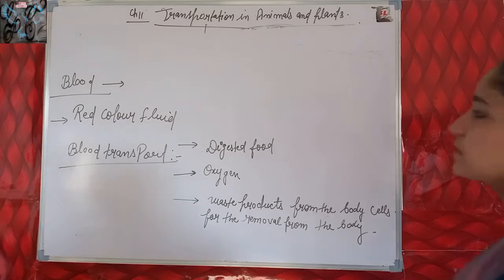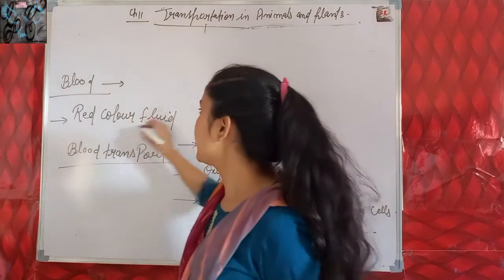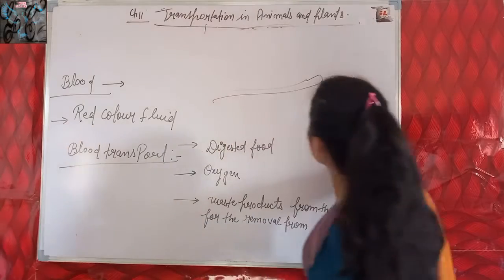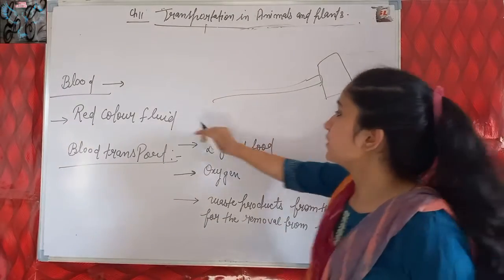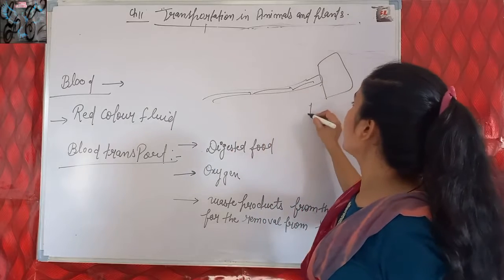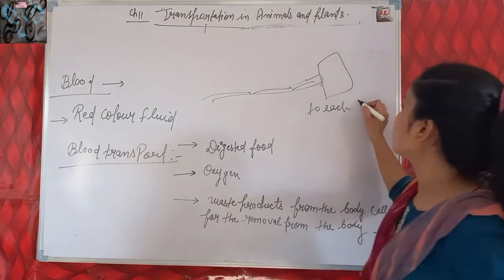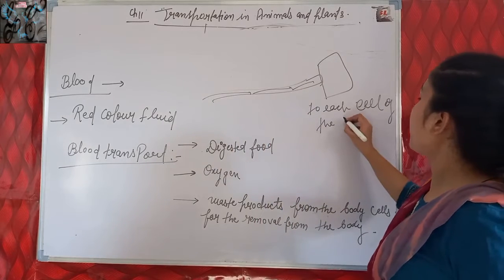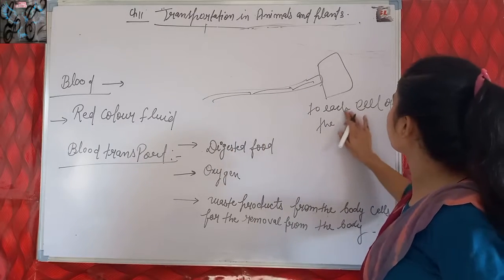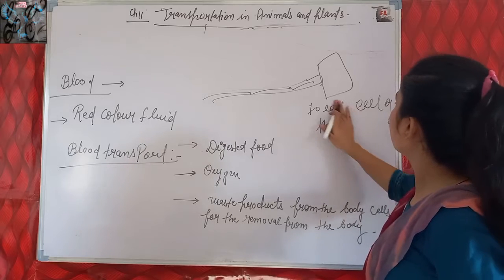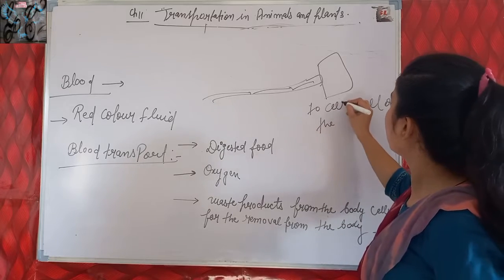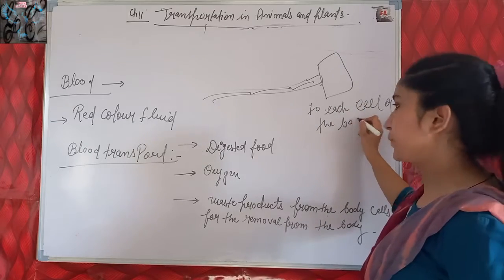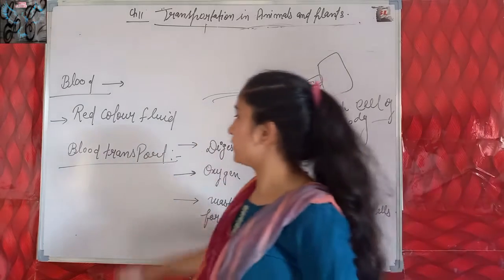What is blood? Blood is a red colored fluid which flows in blood vessels to each part of the body, or to each cell of the body. As you know, our body is made up of cells.